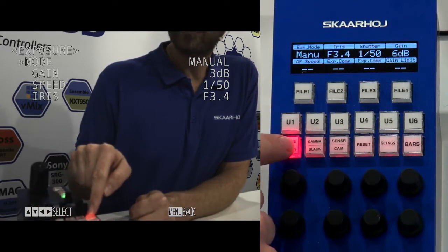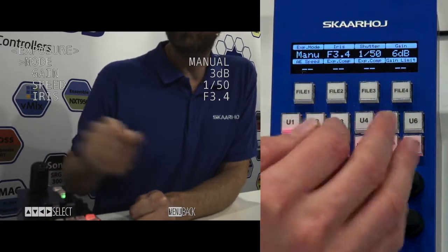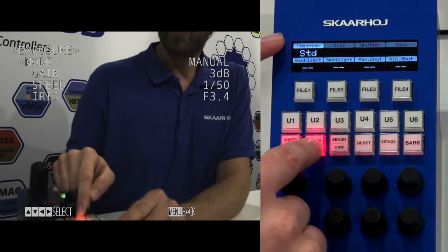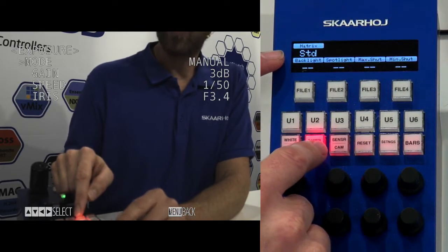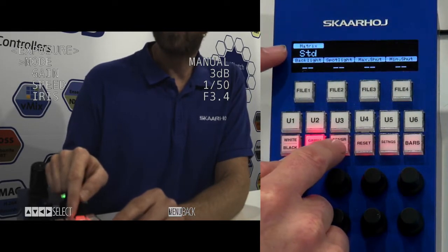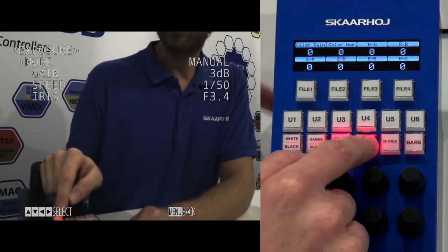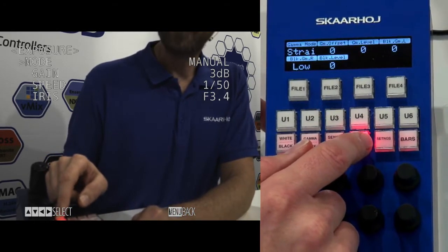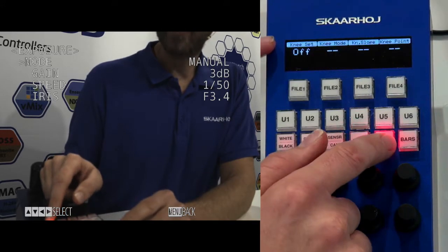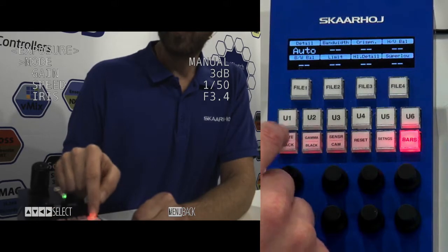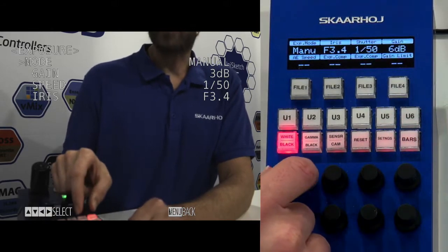I have taken these six buttons and assigned them to work as a menu selector. Right now I am at the exposure menu. Then I've made a matrix. We have all the matrix settings, gamma settings, knee settings, and finally detail settings. We'll take a look at all these options.